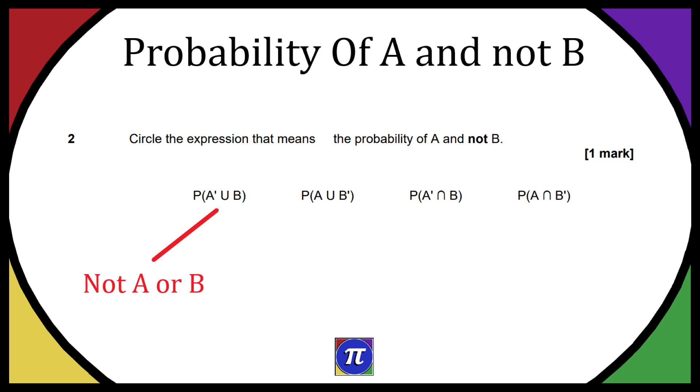So the first one is not A or B. Now that's because we have the P which is the probability of everything in the bracket. The A dash means not A and then the U means or, and then we just have the B by itself which is just the probability of B. So we're basically saying the probability of not A or B. Okay, so hopefully the more we go through the more it makes sense.